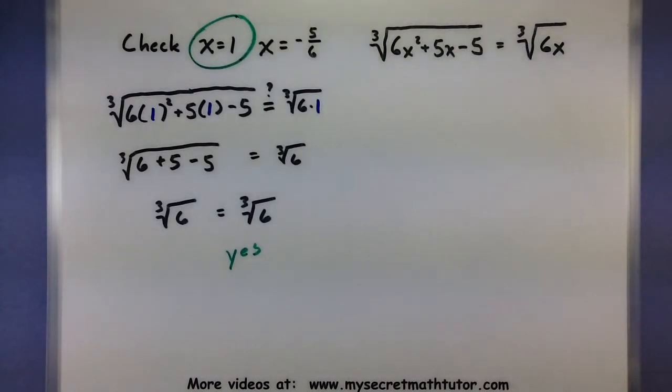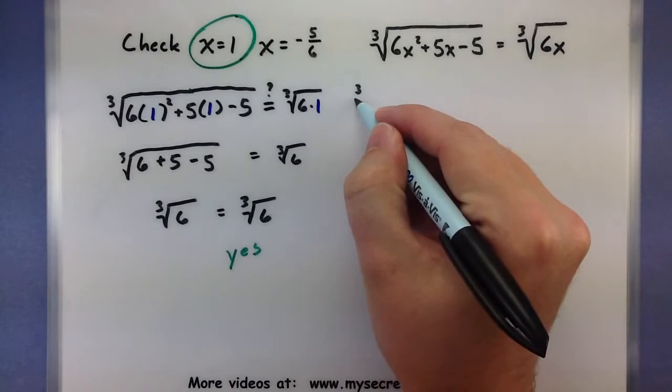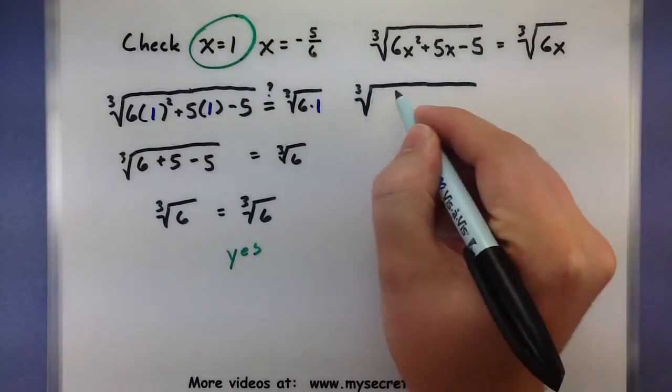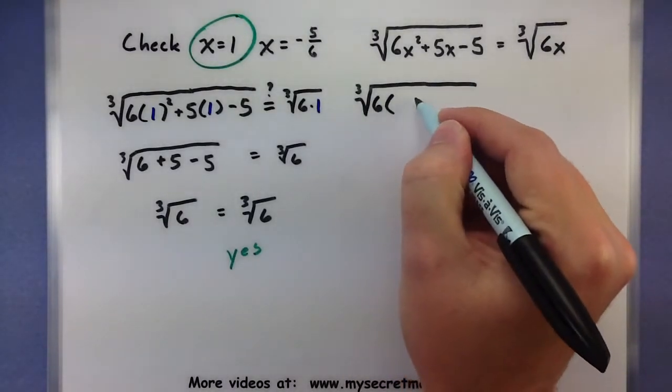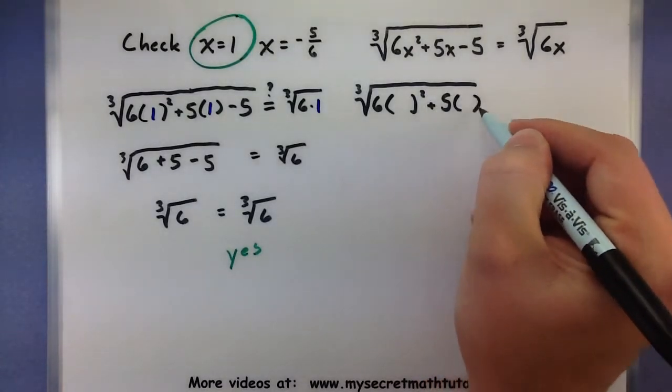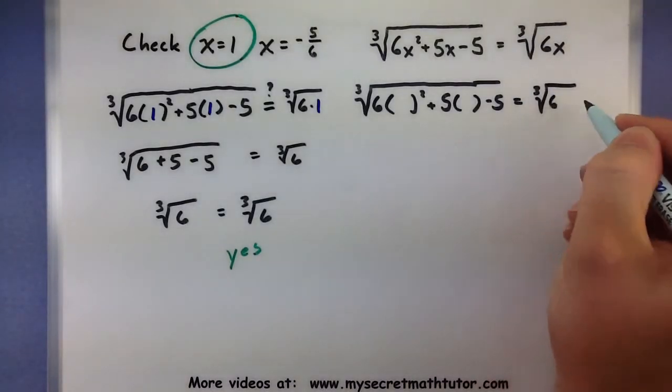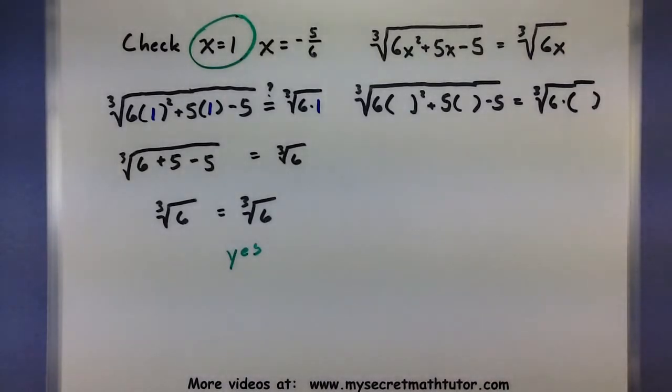All right, now let's try this out with a negative 5 sixths. All right, so we need to put that in for all of the x's. So I have the cubed root of 6 times negative 5 sixths squared plus 5 times negative 5 sixths minus 5 equals the cubed root of 6 times, and we'll put one more negative 5 sixths right underneath there.